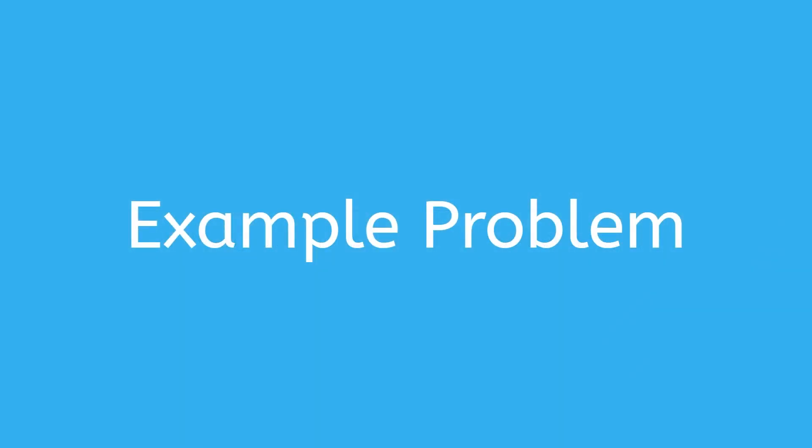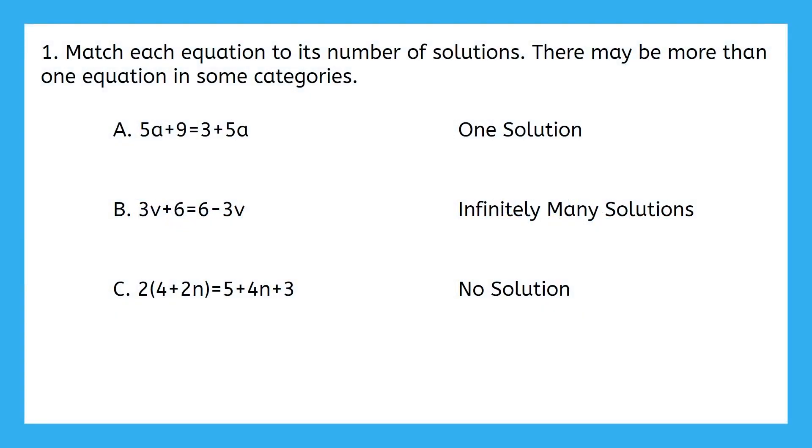So what can we do with this new knowledge? Well, when we fully simplify both sides of an equation, we can pause to check if there are the same number of the variable on each side, and if the constants on each side match. Let's try an example. Our example problem says to match each equation to its number of solutions. There may be more than one equation in some categories. Remember, you can tell if an equation has one solution, infinitely many solutions, or no solution, based on checking to see if the variables match on each side, and then checking to see if the constants match. Pause the video here and give this one a try on your own.